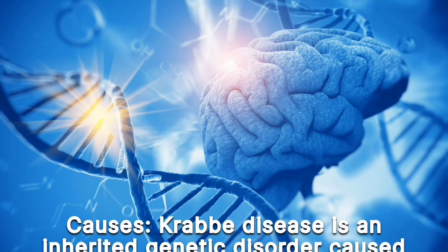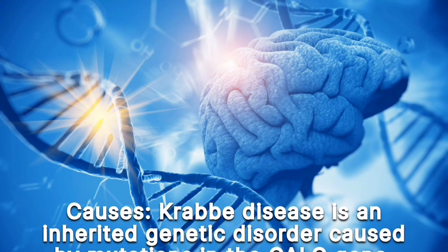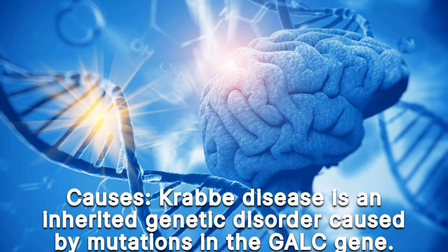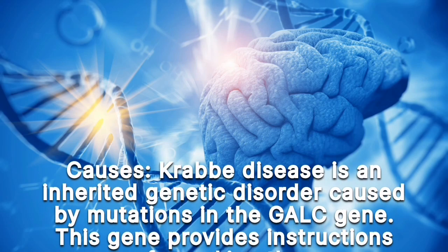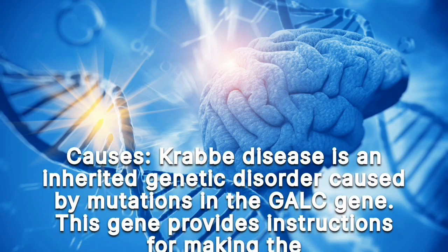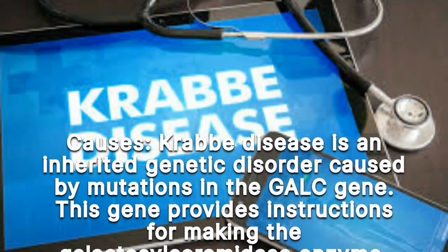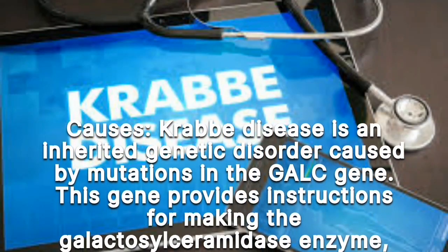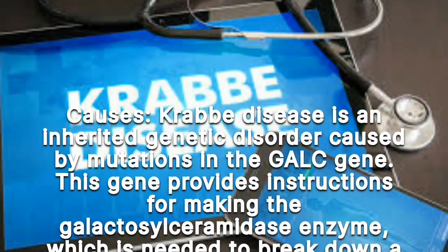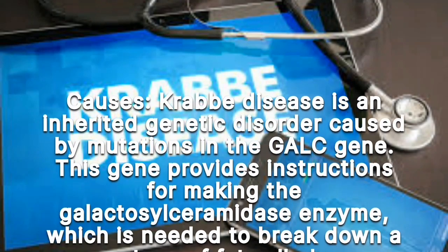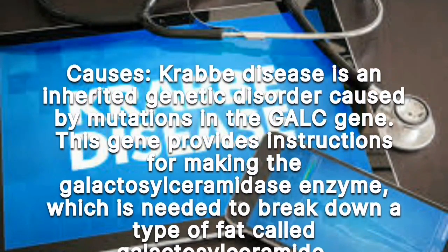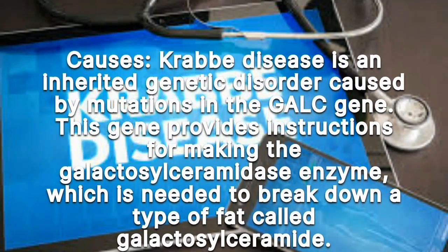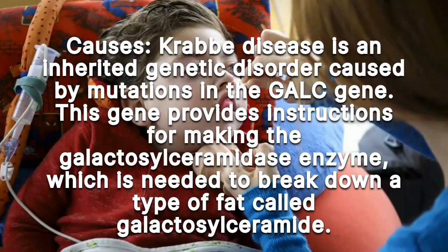Crab disease is an inherited genetic disorder caused by mutations in the GALC gene. This gene provides instructions for making the galactosylceramidase enzyme, which is needed to break down a type of fat called galactosylceramide.